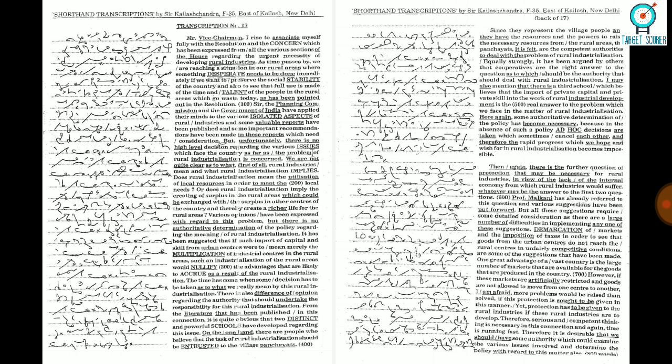Professor Malkani has already referred to this question and various suggestions have been put forward. But all these suggestions require some detailed consideration as there are a large number of difficulties in implementing any one of these suggestions. Demarkation of markets and the imposition of taxes in order to see that goods from the urban centers do not reach the rural centers in unfairly competitive conditions are some of the suggestions that have been made. One great advantage of a vast country is the large number of markets that are available for the goods that are produced in the country.